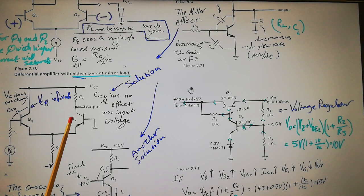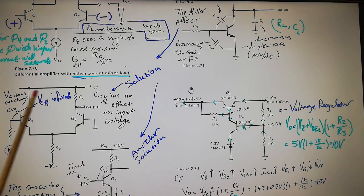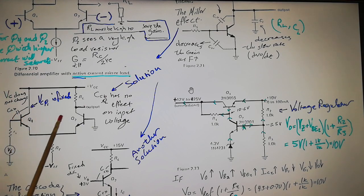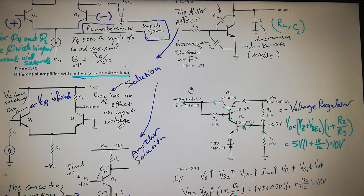What do we do? Like we've done before with current mirrors, we separate the tasks. We let one transistor deal with the input signal and another deal with the output. We let one transistor deal with the load. The bases of Q1 and Q2 are grounded — this is very important. The input signal is fed into Q1, and the collector is connected to VCC, so there is no swing at the collector. That means the value of Ccb stays as it is — it won't be multiplied by the gain.